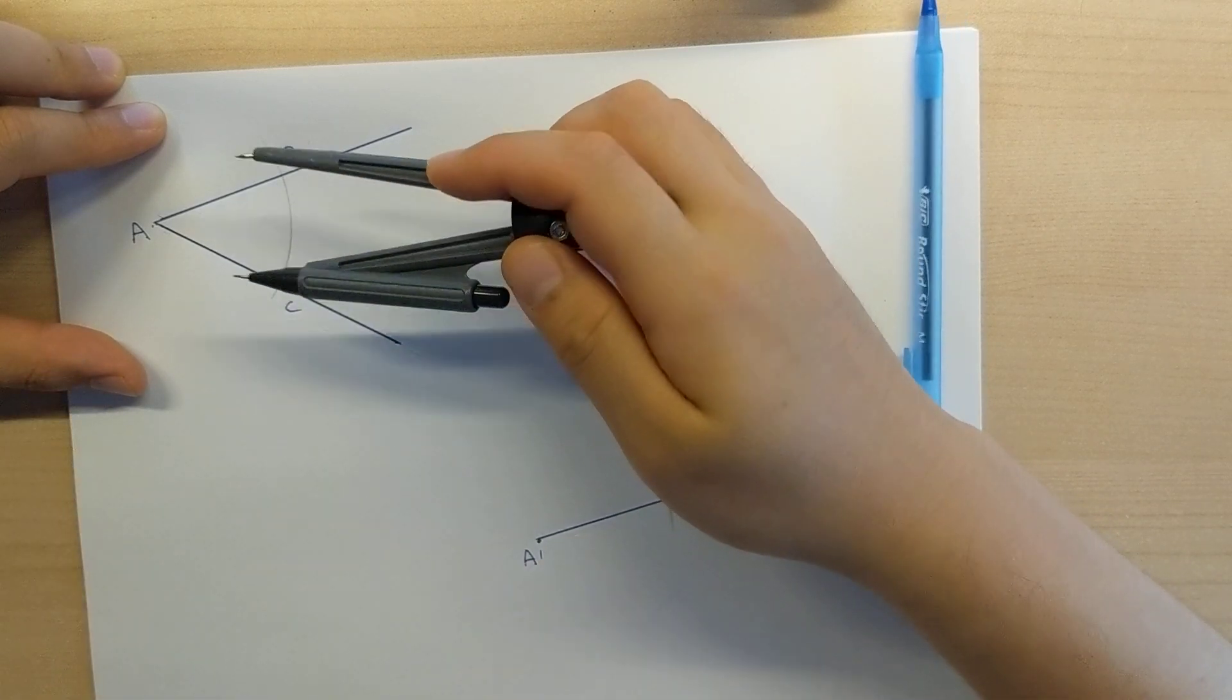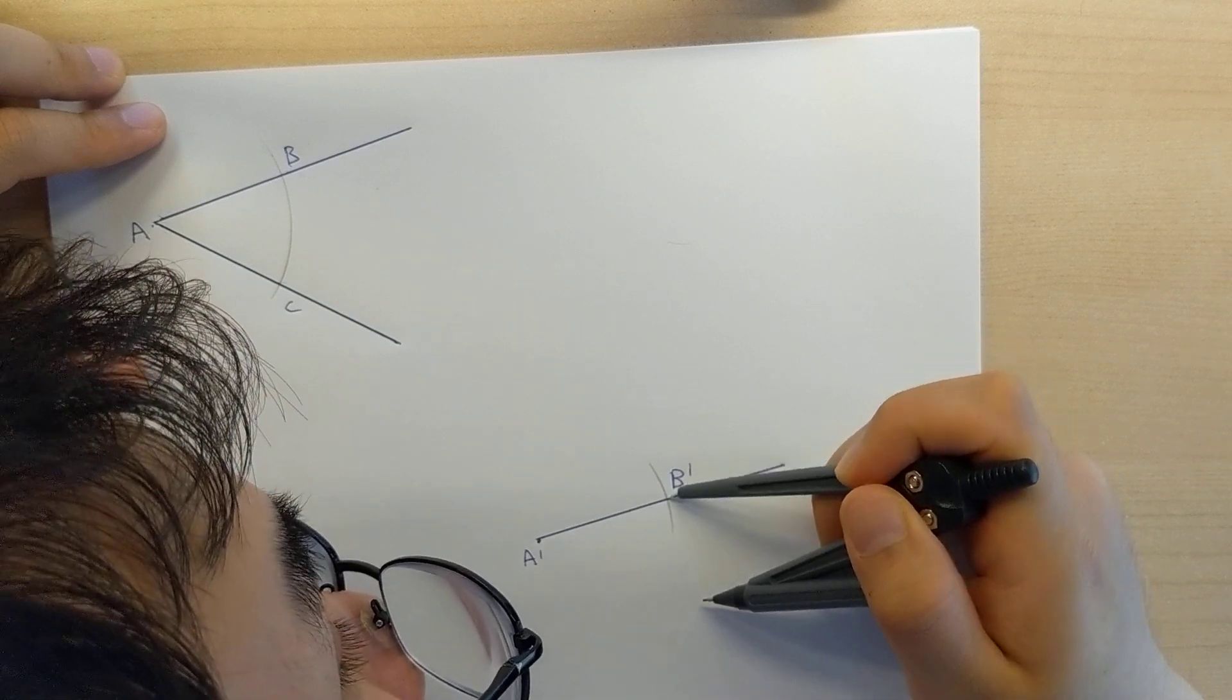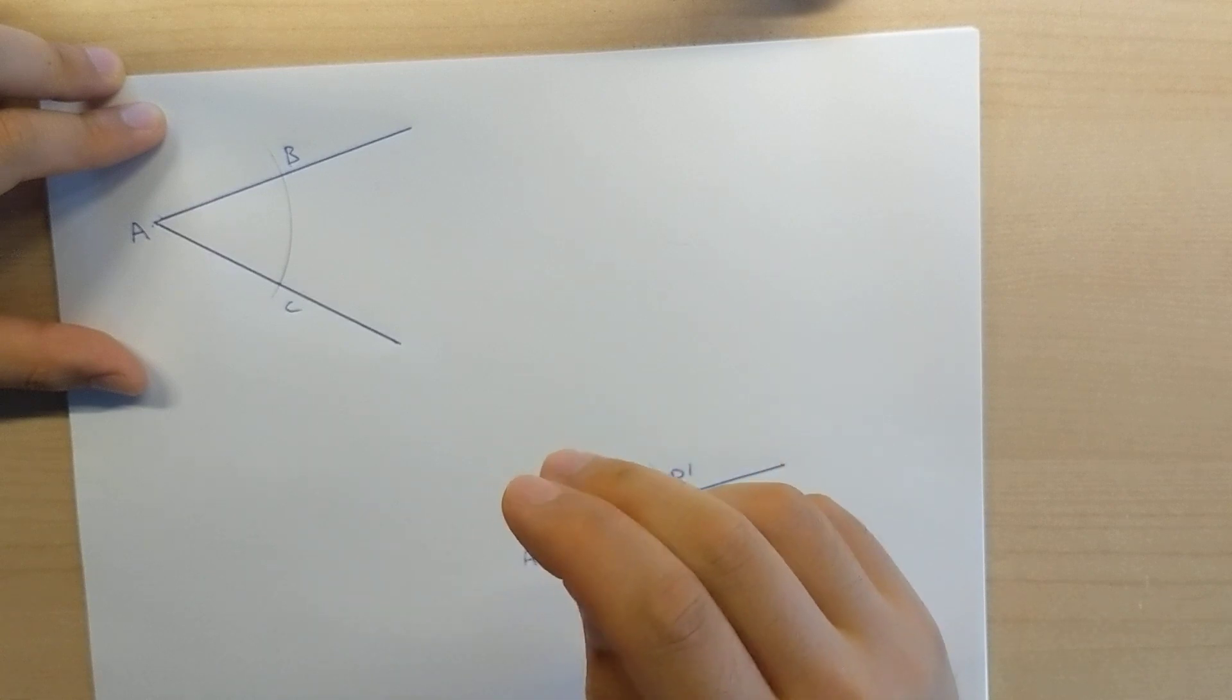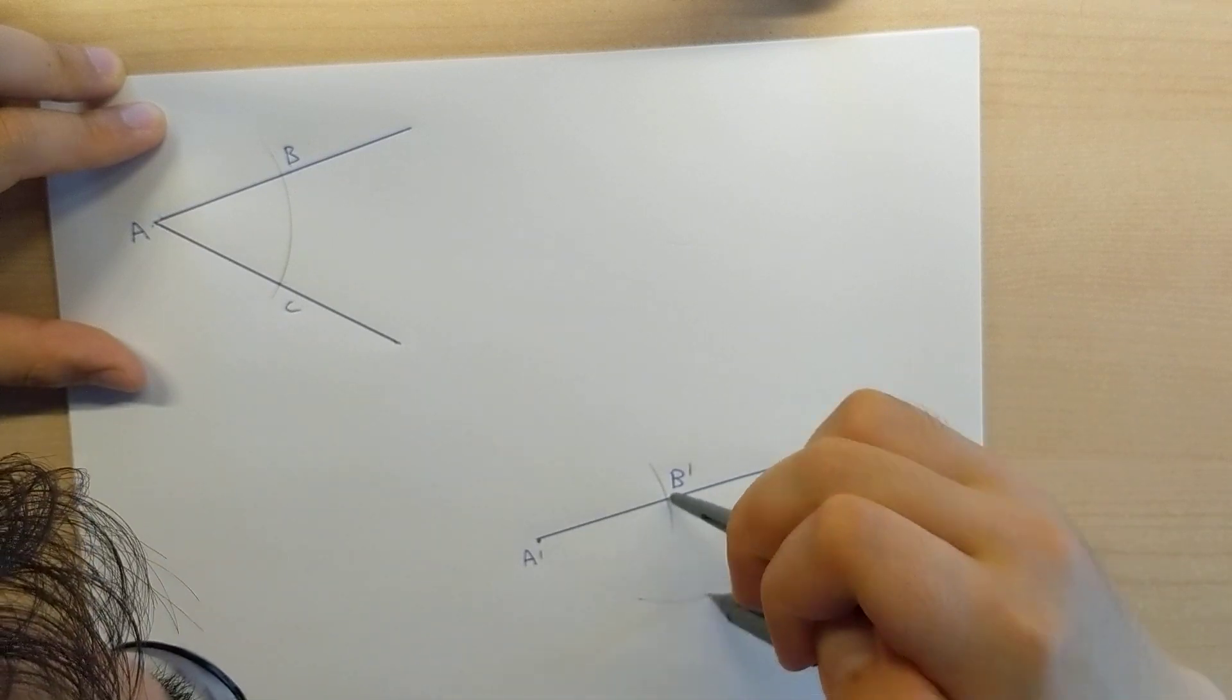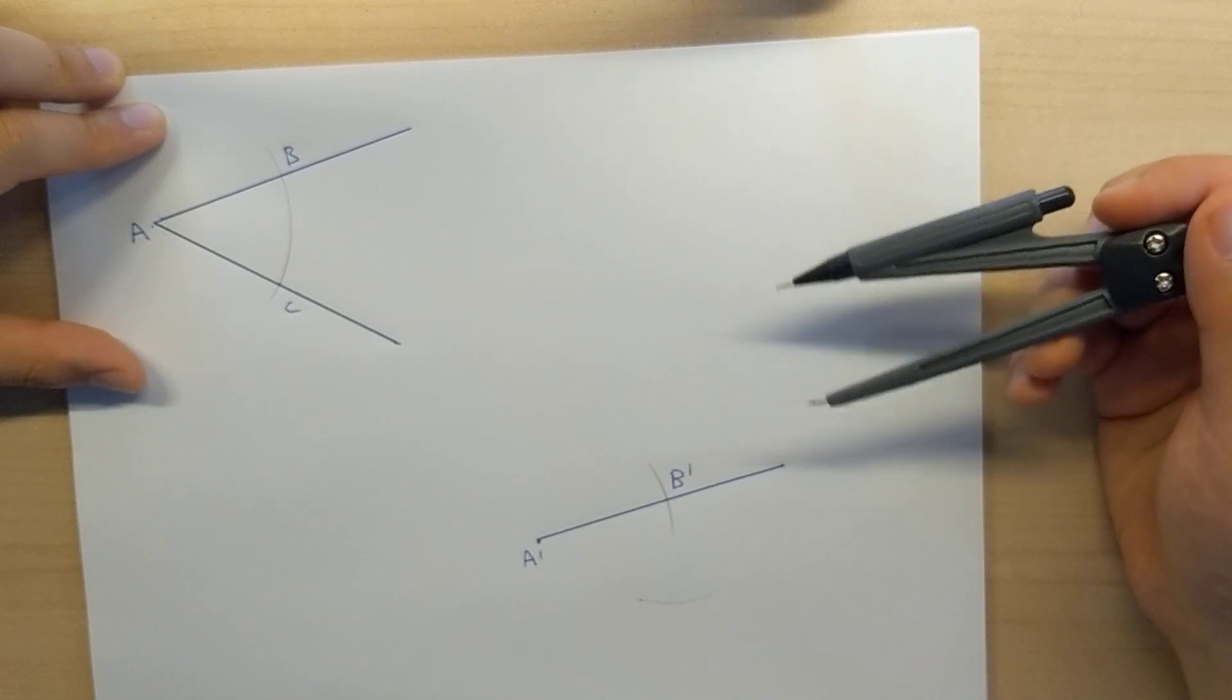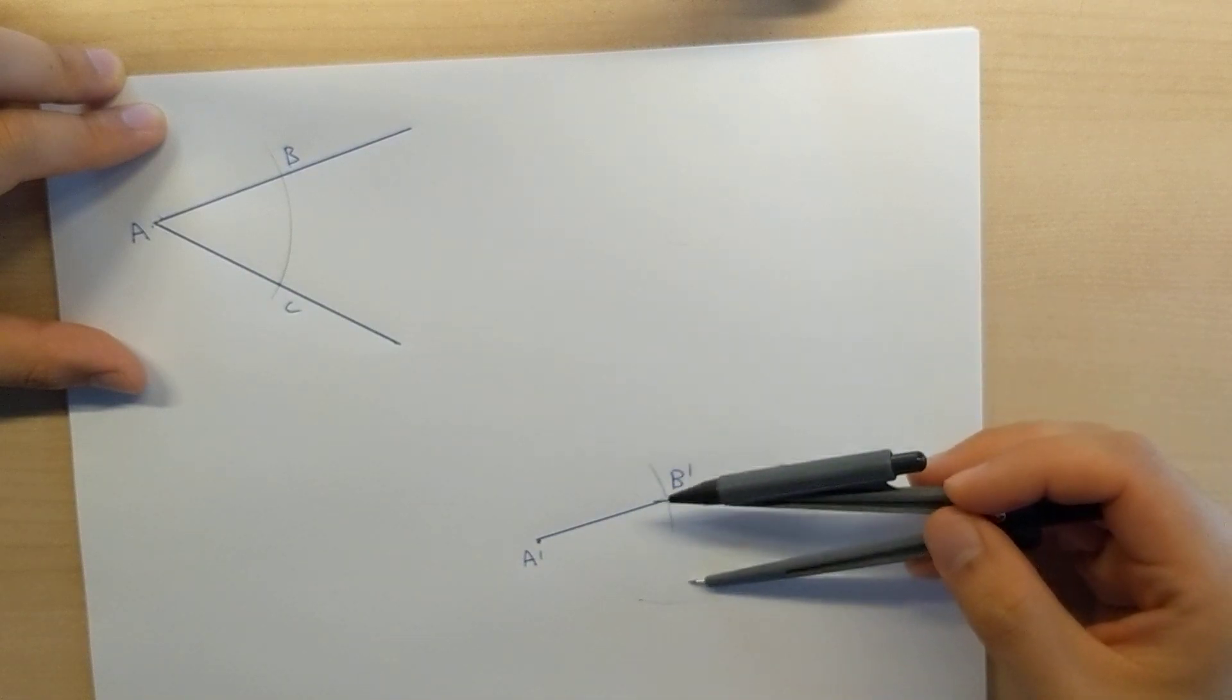And what I'm going to do is I'm going to pick up my compass, I'm going to place my pin on B prime and what I'm going to do is I am going to draw myself an arc. And what should happen is the intersection of this arc should intersect with the arc that I just made. And you can see here, clearly it doesn't.